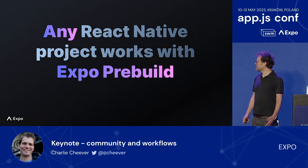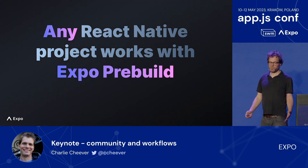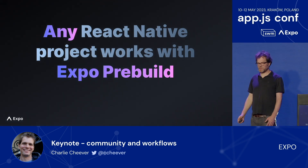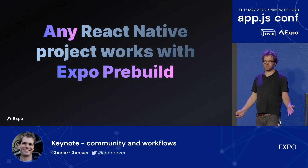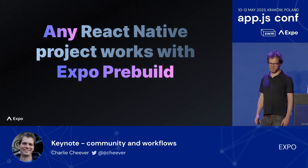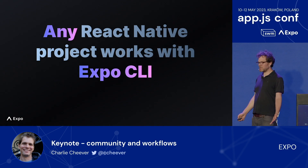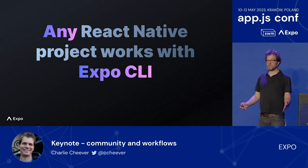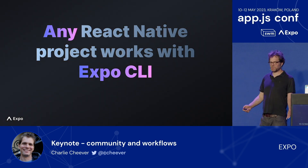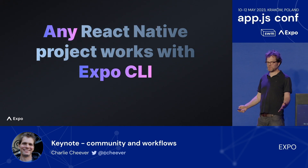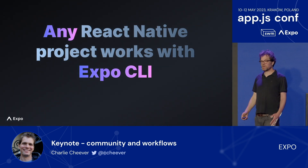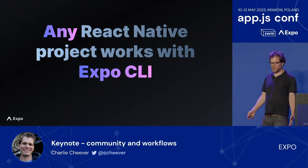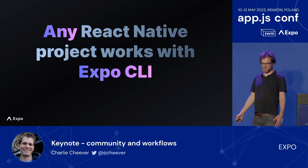Any React Native project can use Expo pre-build, which manages and creates your Android and iOS directories for you in projects that don't need to manually configure those files. And any React Native project works with the Expo CLI. One thing you might not know is you don't actually need to be using Expo Go to use Expo CLI — you can compile a development build of your own app that includes third-party libraries or your own custom native code.